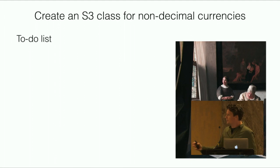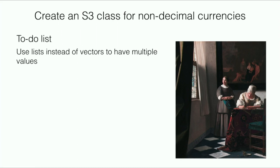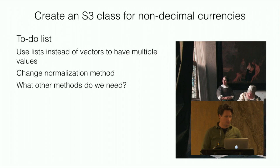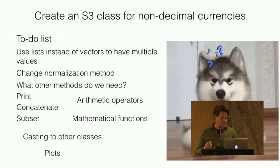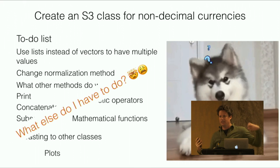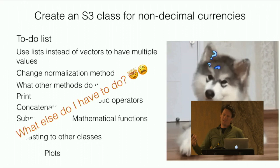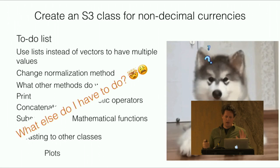I've created an S3 class. Now I'm going to sit down and figure out what else do I need to do. Right now I can only have one value at a time, so maybe I need to use a list or something and change the normalization method. At this point it gets really confusing because you have to implement all these methods and it's not really clear how exactly you're going to do them and what methods you have to implement and why. I went through this and implemented some methods and some I didn't, and then I talked to Hadley Wickham and he said what you should do is use vectors.